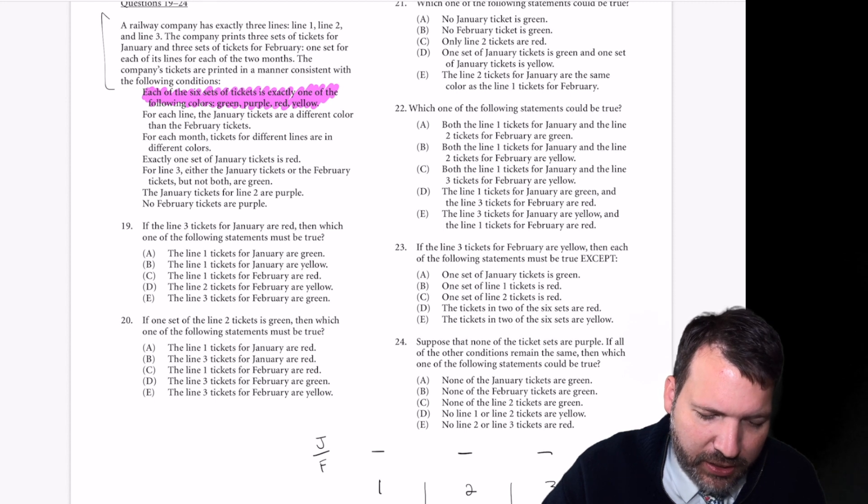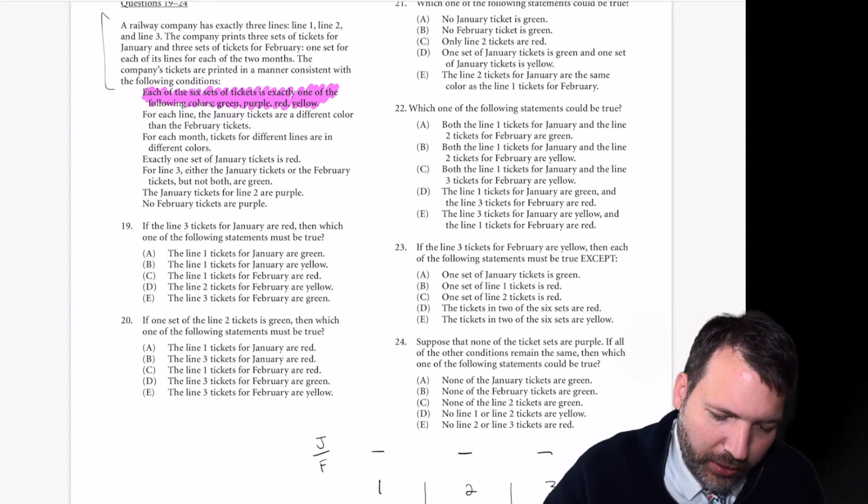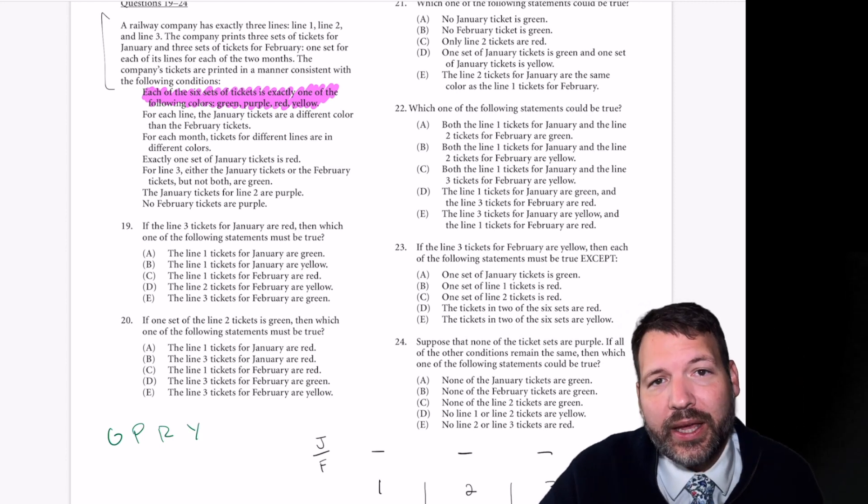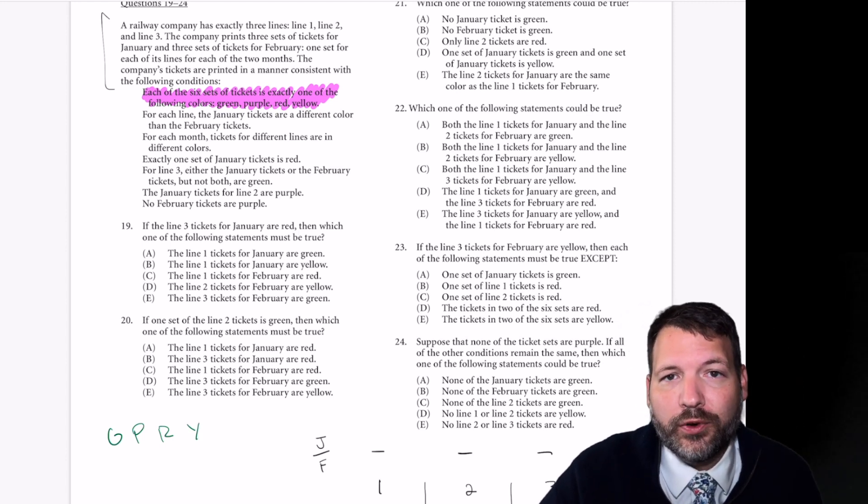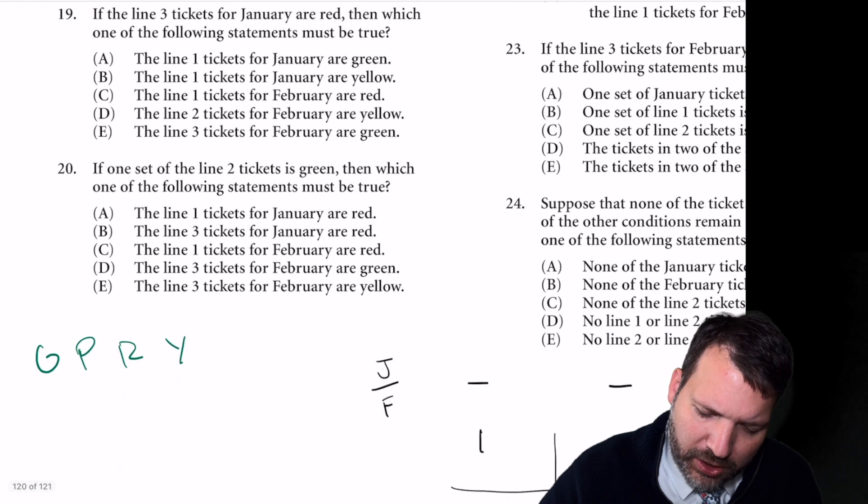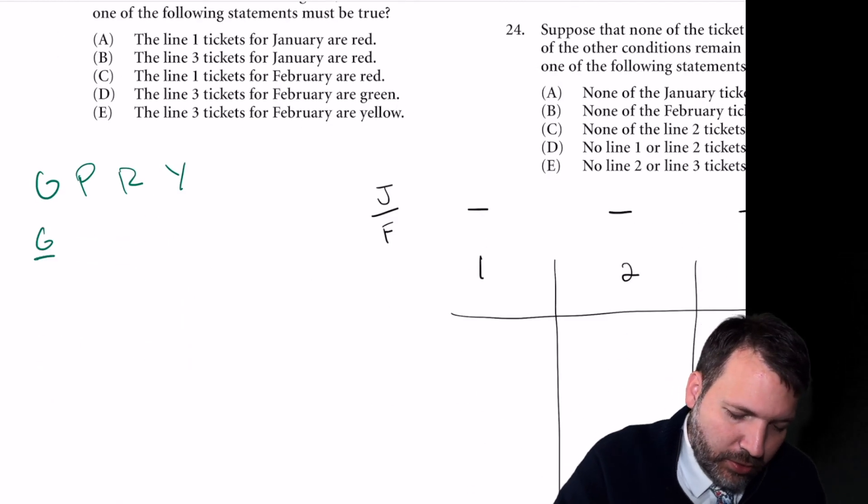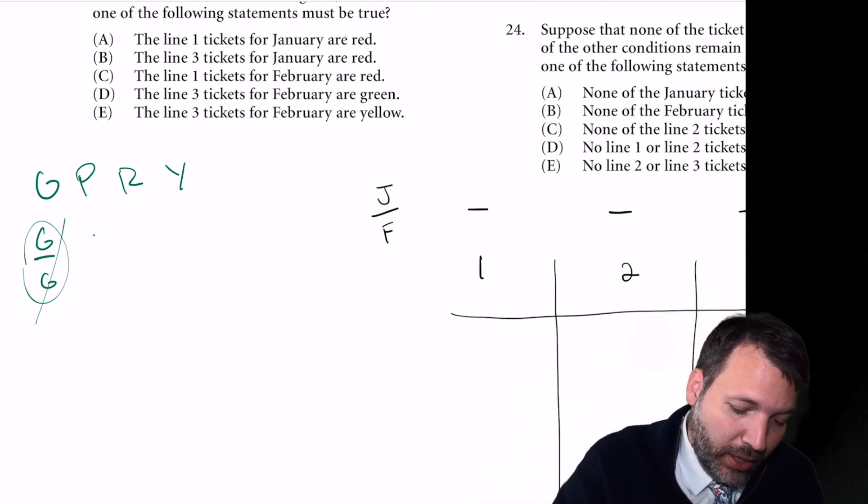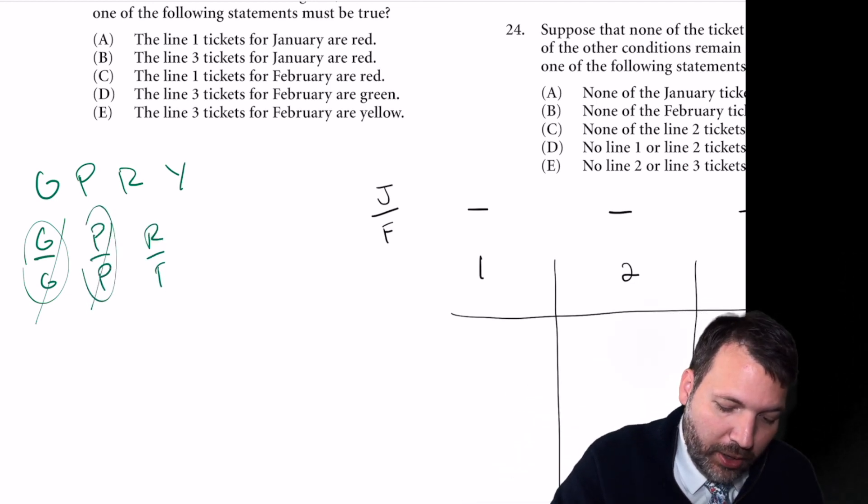Each of the six sets of tickets is exactly one of the following colors: green, purple, red, and yellow. So we're getting our elements. They just happen to be coming in the first clue instead of in the setup. For each line, the January tickets are a different color than the February tickets. So that means if I've used green for January, I can't also use it for February. I'll never see green over green, purple over purple, red over red, or yellow over yellow.